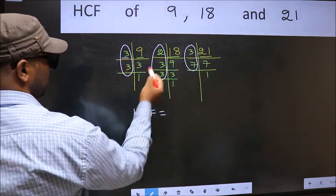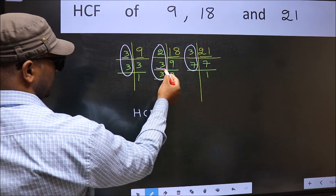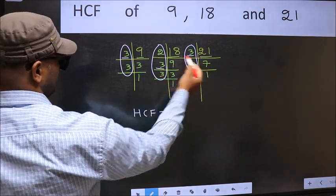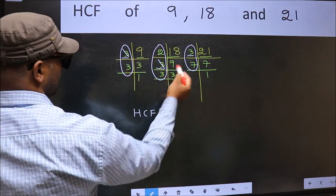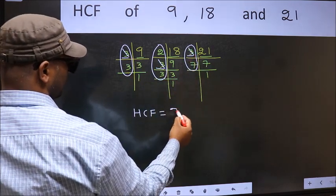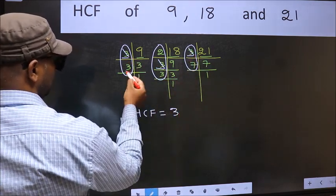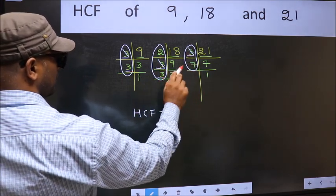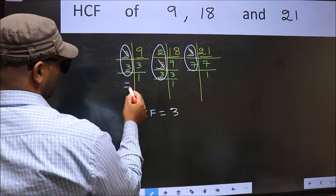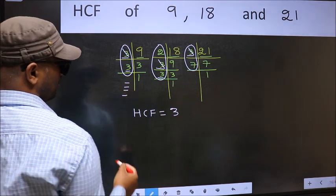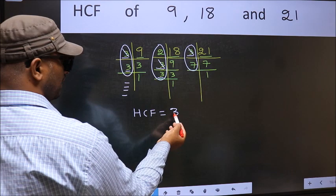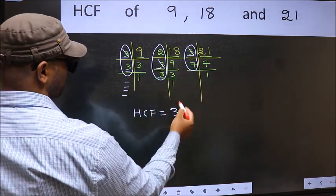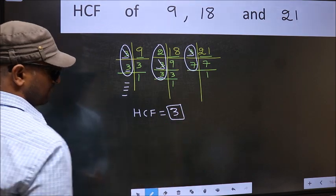Starting with the number 3. Do we have 3 here? Yes. Go to the next place. Do we have 3 here? Yes. So cut 3 right here. Next number 3. Do we have 3 here? Yes. Go to the next place. Do we have 3 here? No. No more numbers have been left out. So we got only one number, 3, present in all three places. So 3 itself is our HCF.